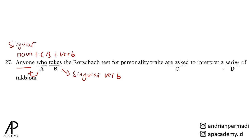Kita lihat pilihan D, a series. Penggunaan artikel a memang merujuk pada noun setelahnya berjumlah satu atau singular, karena a adalah artikel yang menunjukkan jumlah satu untuk singular noun. Apakah series adalah singular noun? Ternyata iya. Series adalah kata dasar; akhiran E-S di sana bukan menunjukkan bahwa noun tersebut berjumlah banyak. Series memang merupakan kata dasar yang artinya seri, sekumpulan hal yang sama. Oleh karena itu, D masih benar.